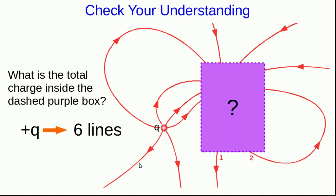So there are one, two lines coming out, and there are one, two, three, four, five, six, seven, eight lines going in.